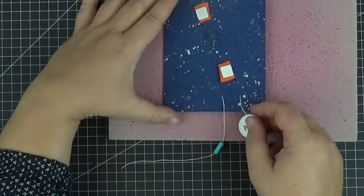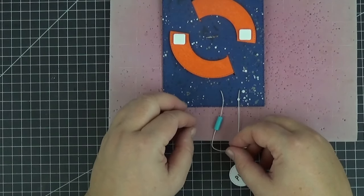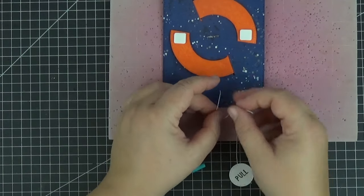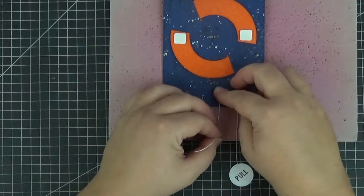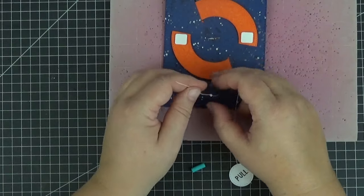Remember to pull out string number one completely before adding anything to string number two, especially if you plan on trimming it. I tried adding a couple of knots to keep the bead from moving too much but I didn't do such a great job.